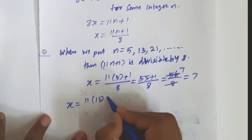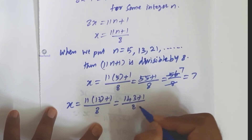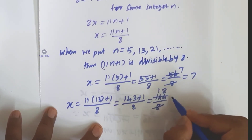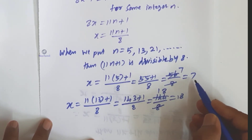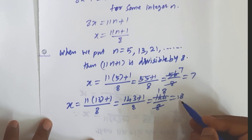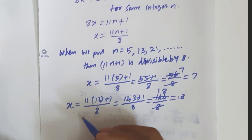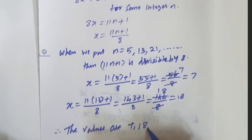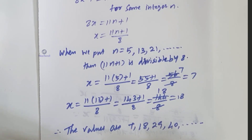For n equals 13: x equals (11 times 13 plus 1) divided by 8 equals 143 plus 1 divided by 8 equals 144 divided by 8 equals 18. So x equals 18. Therefore the values of x are 7, then 7 plus 11 equals 18, then 18 plus 11 equals 29, then 40, and so on — adding 11 each time.